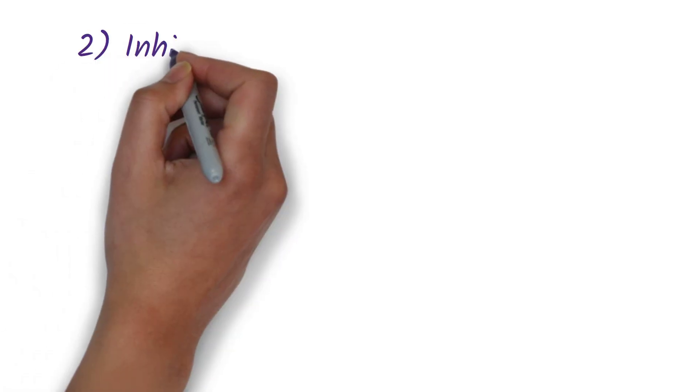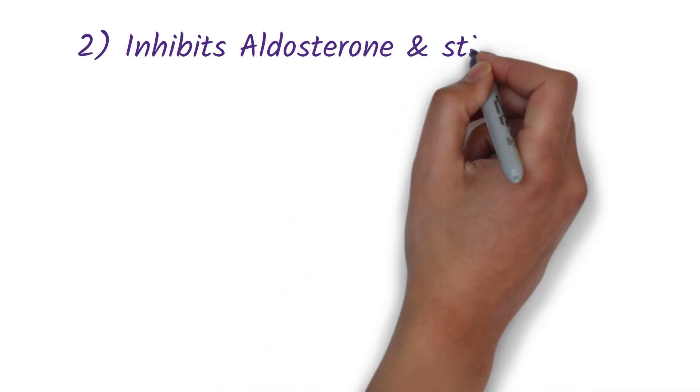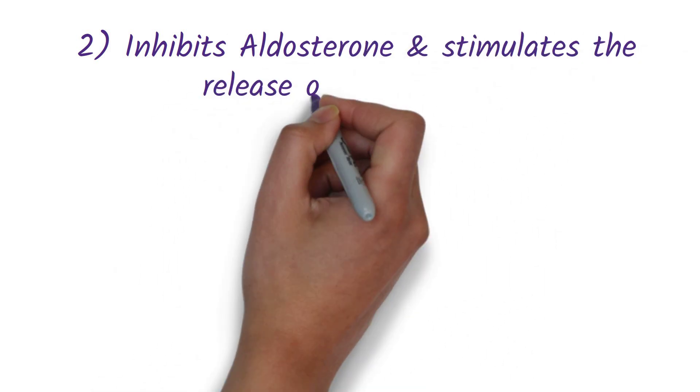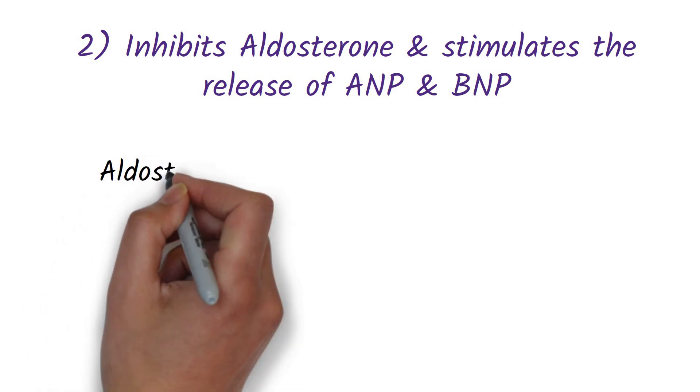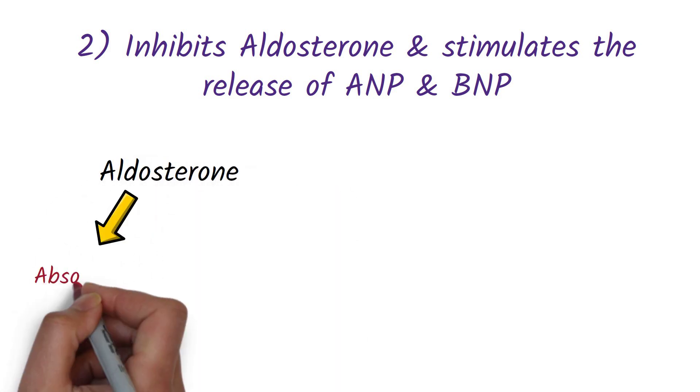Number two: the massive volume expansion caused by high levels of ADH inhibits the release of a hormone called aldosterone and stimulates the release of two hormones called ANP and BNP.